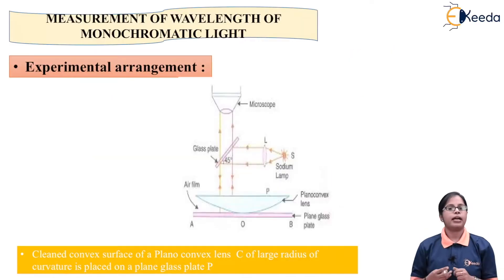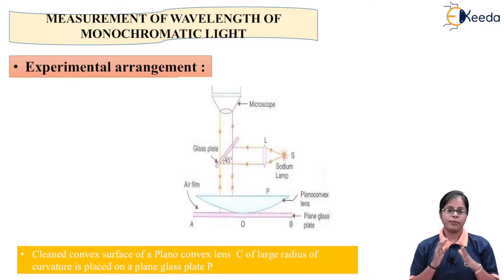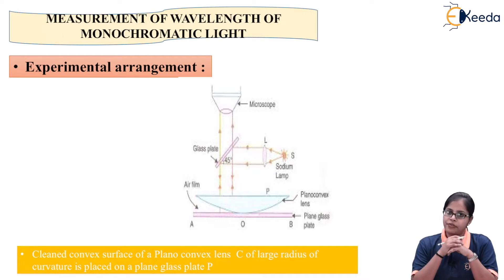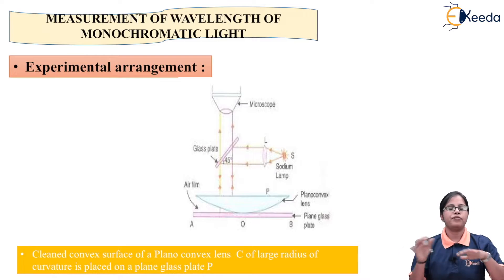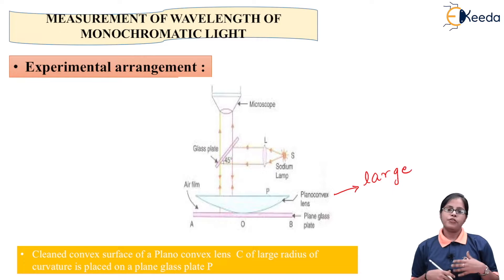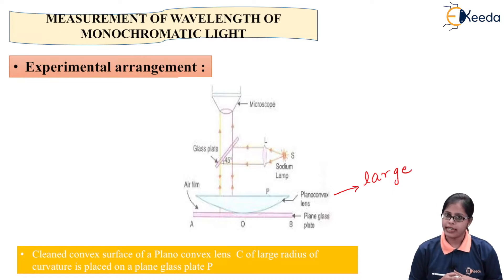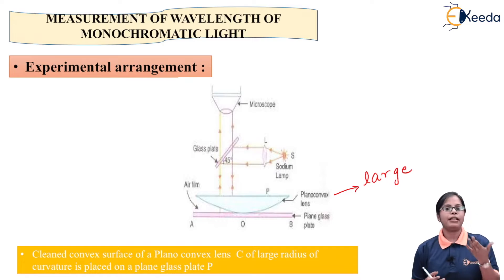Starting with the concept of calculation of wavelength of monochromatic light which is used as a source. For that we make an experimental arrangement in which we place a plano-convex lens on a plain glass plate. The surface has to be properly cleaned, and the plano-convex lens which we are using has a large radius of curvature.